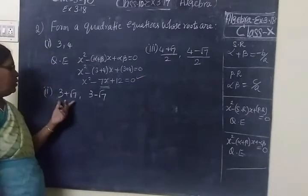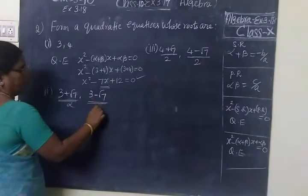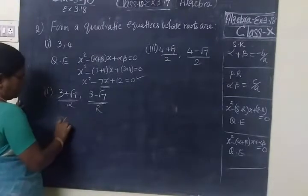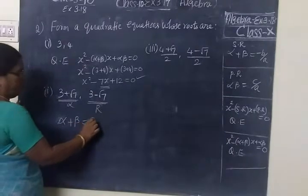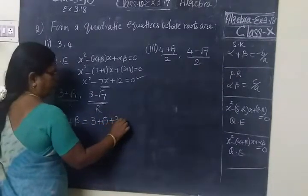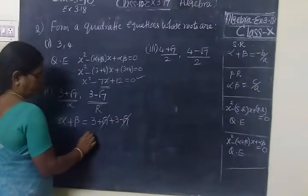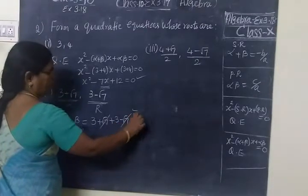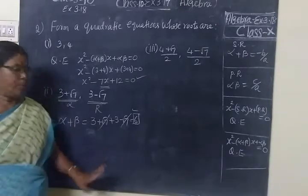Then the second one. This is alpha and this is beta. So you have to find alpha plus beta. First, alpha plus beta. We are finding sum of the roots. So 3 plus root 7 plus 3 minus root 7. So plus root 7 minus root 7 cancels. So this is equal to 6. So we have found alpha plus beta, sum of the roots.